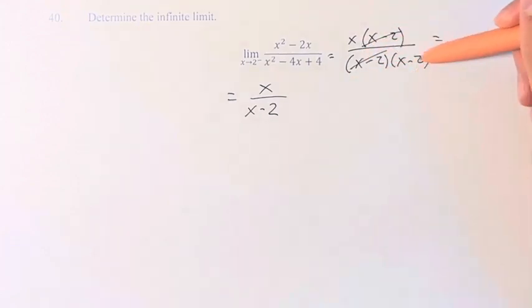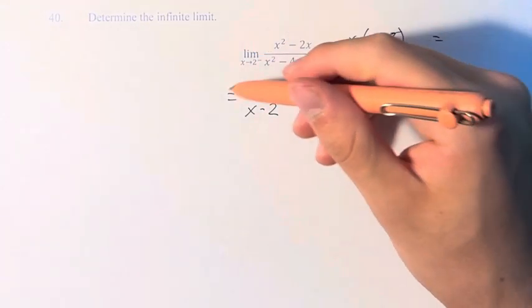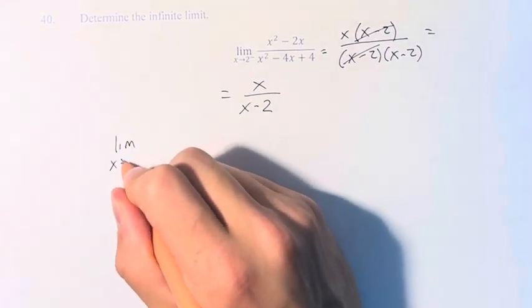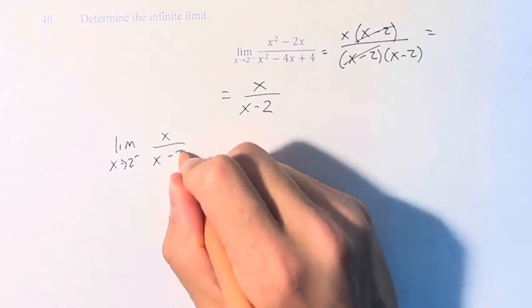And since this term is the same as this term, we don't have to worry about domain restrictions, and we can just say that we're looking for the limit as x approaches 2 from the left of x over x minus 2.